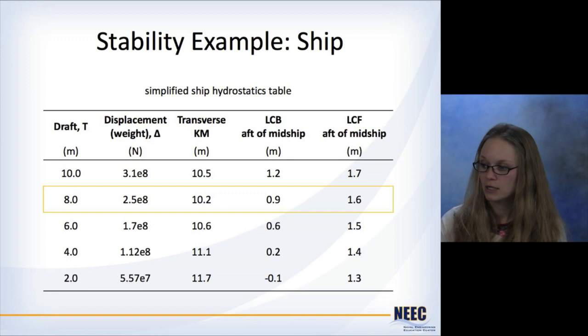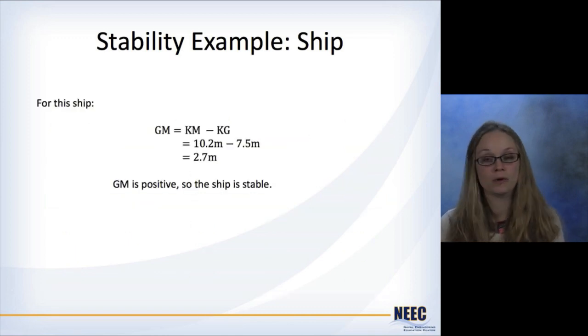So you pluck that number out, plug it into our equation, and GM is equal to 2.7 meters. GM is positive, so the ship is stable.